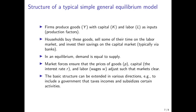This slide shows the notation from the previous slide. Final goods production is usually denoted by Y — that's the output of an economy or its gross domestic product, the value of goods and services produced within a year. Capital is typically denoted by uppercase K, and labor by uppercase L — these are the inputs for production. In equilibrium, demand equals supply, and the prices — for goods, for capital (the interest rate), and for labor (wages) — adjust such that markets clear.